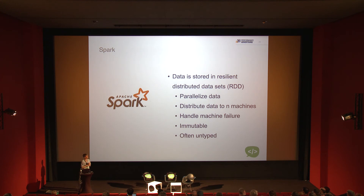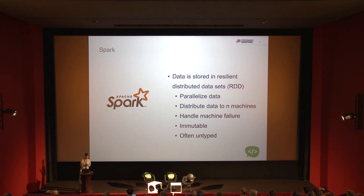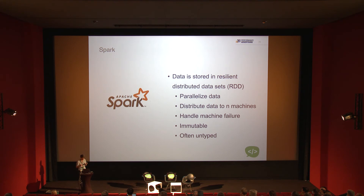A problem with RDDs historically is that they're often untyped — you read a CSV file and have a column of numbers, then an error in the CSV makes one cell a string. RDDs allow that, which can cause problems down the road since it's unpredictable how your system will handle it.